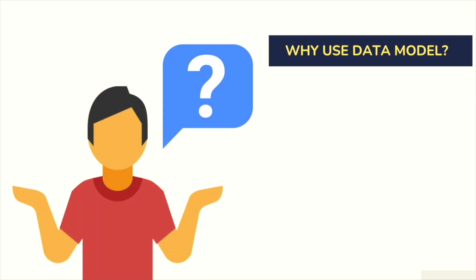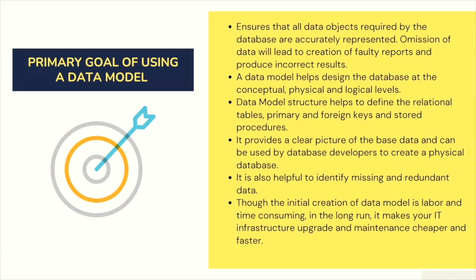Why use a data model? Let's discuss the primary goals. First, it ensures that all data objects required by the database are accurately represented - how you connect different objects and get data is handled by data modeling. Omission of data will lead to faulty reports and incorrect results. If your relationships or data modeling are not correct, you won't get accurate results. A data model also helps design the database at conceptual, physical, and logical levels.